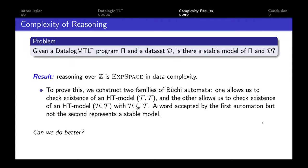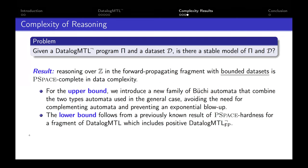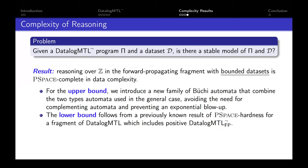Since the positive case is PSPACE, we ask whether we can do better. For the forward propagating fragment with bounded datasets, reasoning is PSPACE-complete in data complexity. For the upper bound, since information only propagates to the future, we can start with a data-independent part and then move forward in time checking for a stable model, using just one automaton that handles both checks from the general case — avoiding complementation and the exponential blowup. The lower bound follows from a previously known PSPACE-hardness result for a fragment of DatalogMTL that includes the forward propagating fragment in the positive case.